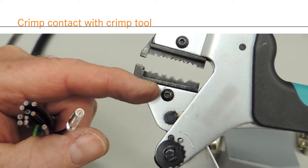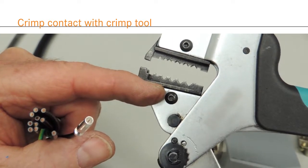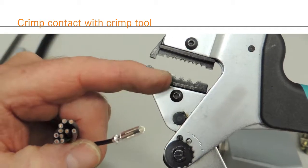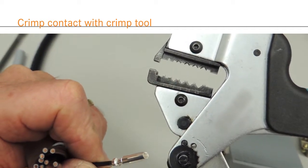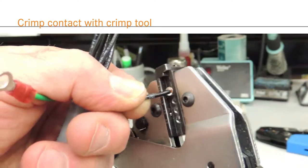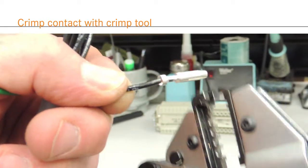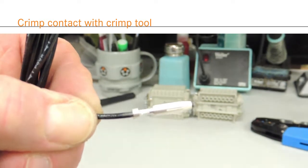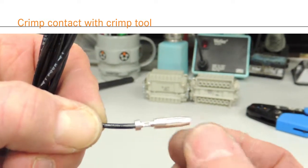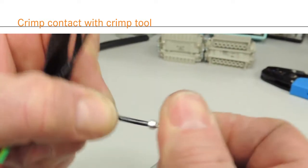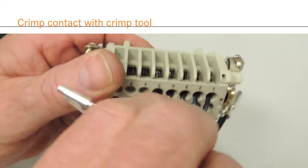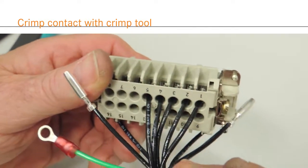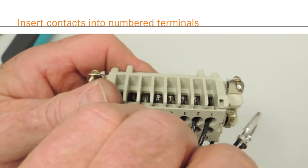Using the appropriate crimp die, in this example that's one millimeter, crimp the contact to the wire using a crimping tool. Crimp contacts can be either stamped and formed or machined and are plated in either silver or gold to resist corrosion and improve conductivity. Silver has the highest electrical conductivity of any metal and it is the most cost-effective. Gold contacts are ideal for low current and low voltage signal transmission.